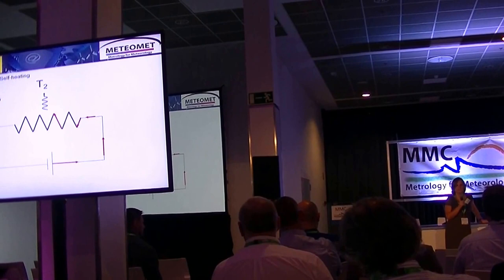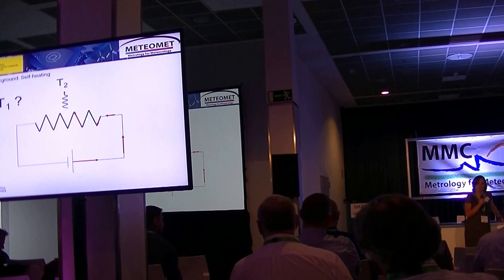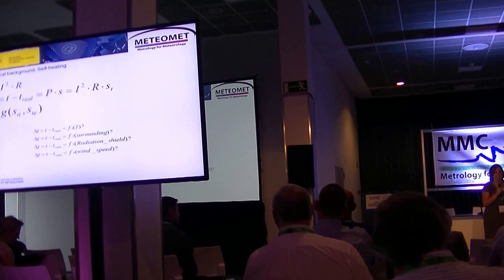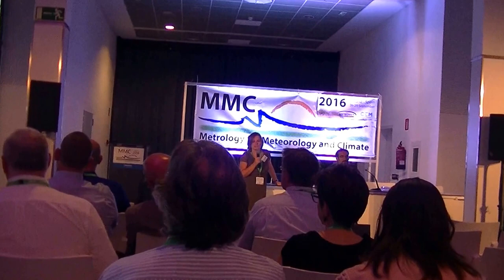So what is the difference between the real temperature and the temperature measured by the thermometer? This is what we want to analyze in this talk. The model states that the difference in temperature is a function of the square of the current, the resistor, and a self-heating coefficient.